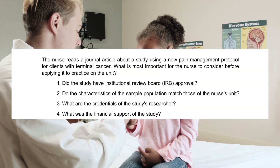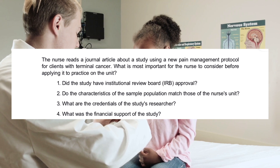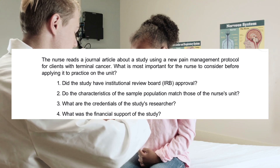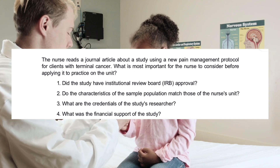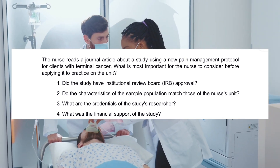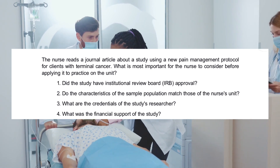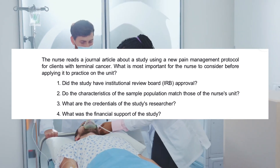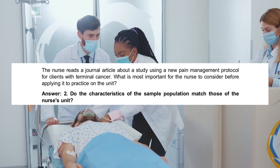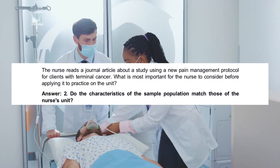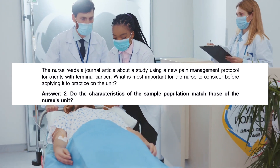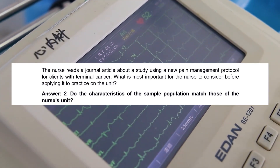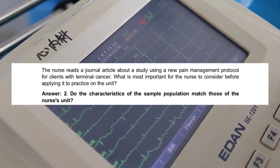The nurse reads a journal article about a study using a new pain management protocol for clients with terminal cancer. What is most important for the nurse to consider before applying it to practice on the unit? Options: Did the study have institutional review board approval? Do the characteristics of the sample population match those of the nurse's unit? What are the credentials of the study's researcher? What was the financial support of the study? The correct answer is: Do the characteristics of the sample population match those of the nurse's unit?